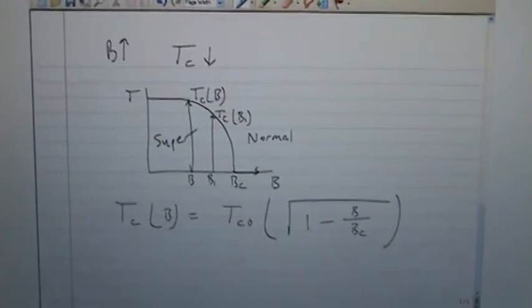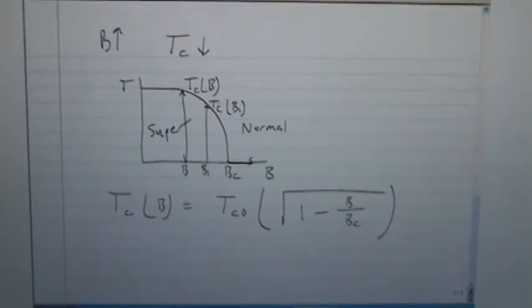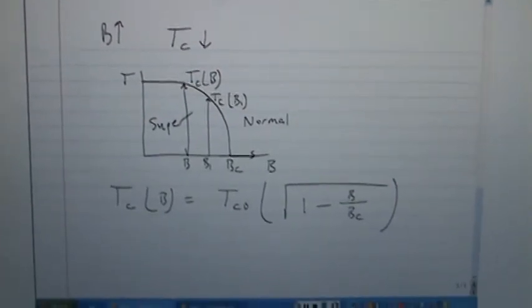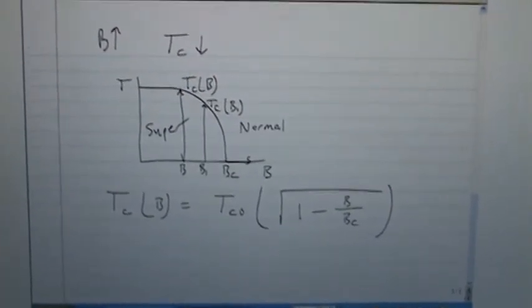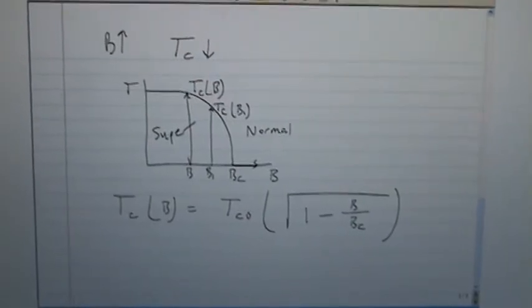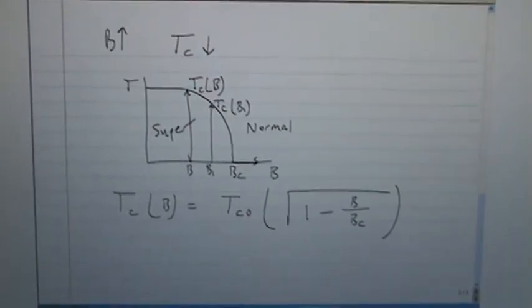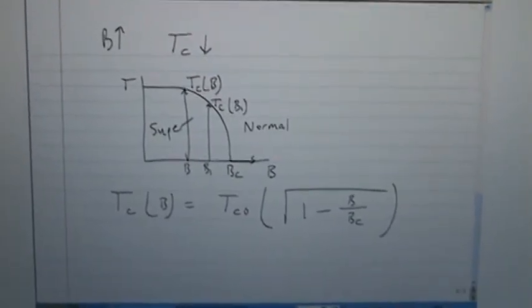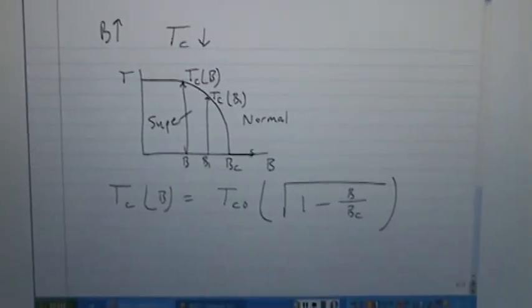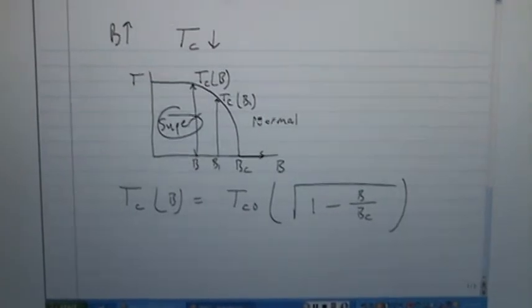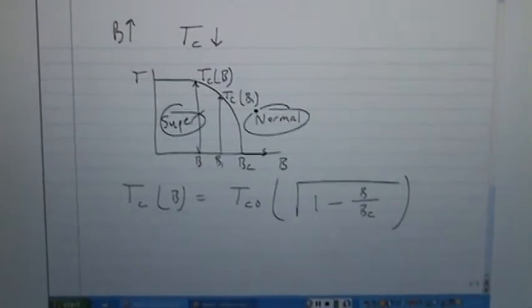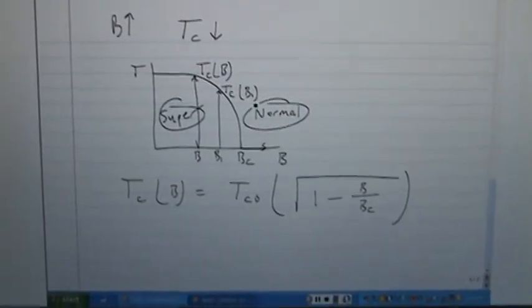Everything we've talked about so far deals with type 1 superconductors. Think of them as a now-you-see-it-now-you-don't phenomenon — at first it was a superconductor, and then suddenly it becomes a normal conductor.